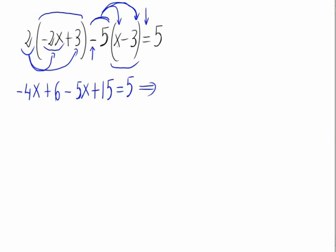First we are going to gather the x's from the left part. Negative 4x and negative 5x is negative 9x. Now we do 6 plus 15 gives 21 and altogether equals 5.